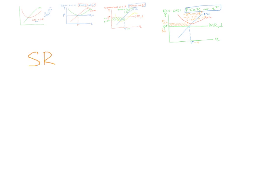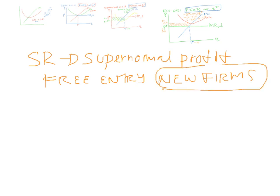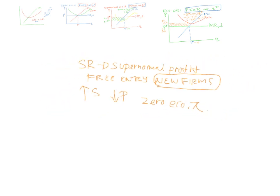So in the short run, if you are making super normal profit, it will be unsustainable — you cannot continue with this. What will happen is, because of our assumption of free entry, new firms will enter. This will increase supply in the market, lower price, until you end up at zero economic profit. So in the long run, you have zero economic profit.